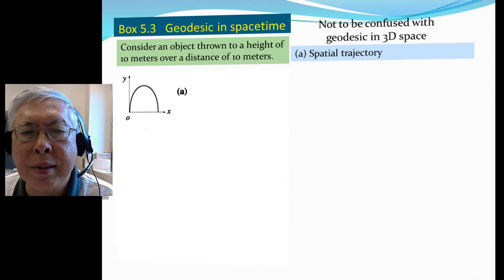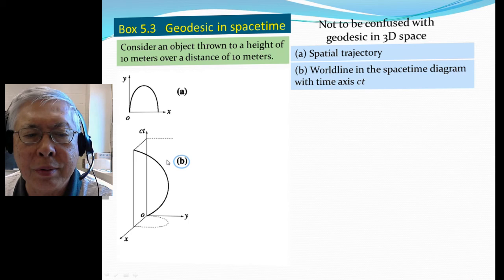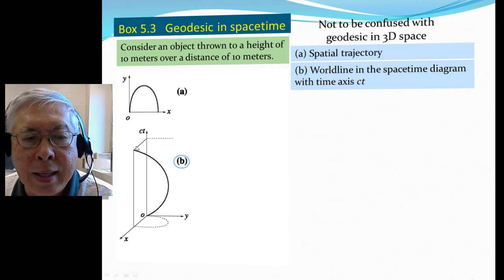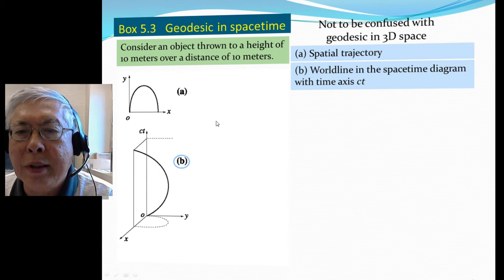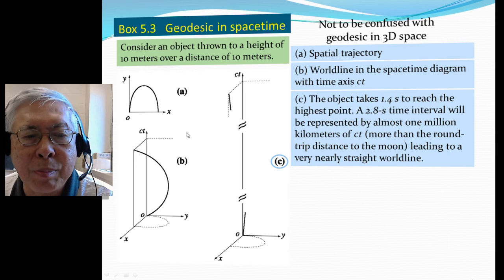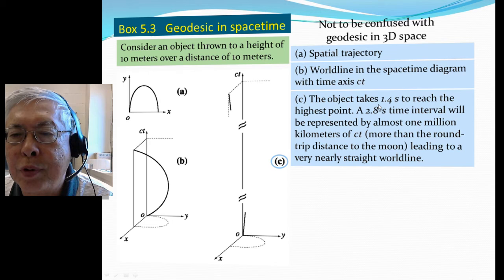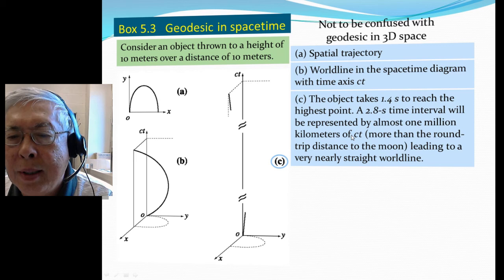But when we talk about geodesics, we're talking about space-time. So we're interested in the worldline of this particle — going from the origin to this point. Its projection on the x-y plane is the parabola we talked about. In a space-time diagram, the time axis is multiplied by c. So we need to multiply the time the particle is in the air by a factor of c. The object takes 1.4 seconds to reach the height and 2.8 seconds for the whole up-and-down trip. Multiplying 2.8 by c gives something like 10 million kilometers.